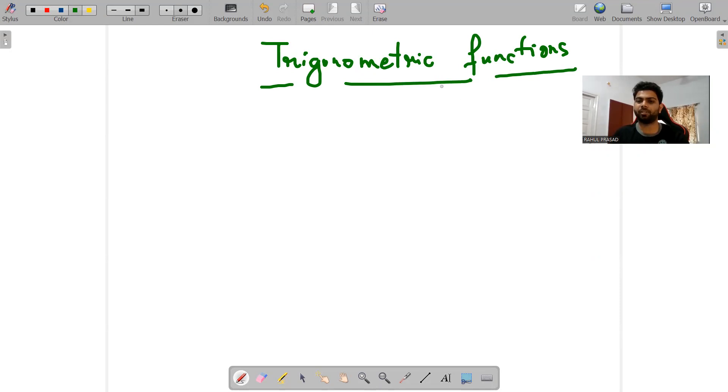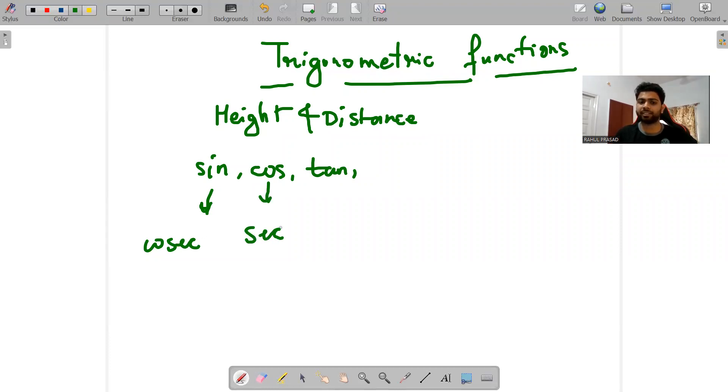In grade 10, you must have already read about various trigonometric topics: height and distance, which was part of trigonometry, and the basic trigonometric functions. By that I mean sine, cos, tan and their reciprocals, which are cosec, sec, and cot. And at various angles, what will be their values? Various angles means at 0 degrees, 30 degrees, 45 degrees, 60 degrees, and 90 degrees. What will be their respective values of each of the six trigonometric functions, and some proofs and basic things which we have discussed in grade 10 of CBSE.